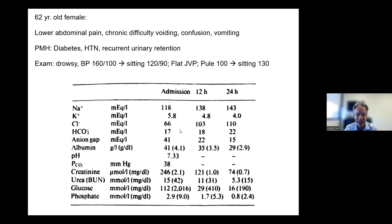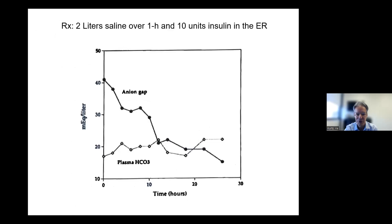The anion gap fell back to approximately normal in a day — the biggest change from the original level. The patient was given two liters of saline over an hour and some insulin, thought to have ketoacidosis with the high blood sugar and high anion gap. The anion gap came down very nicely, but the bicarbonate did not change — and I'm going to focus on that.